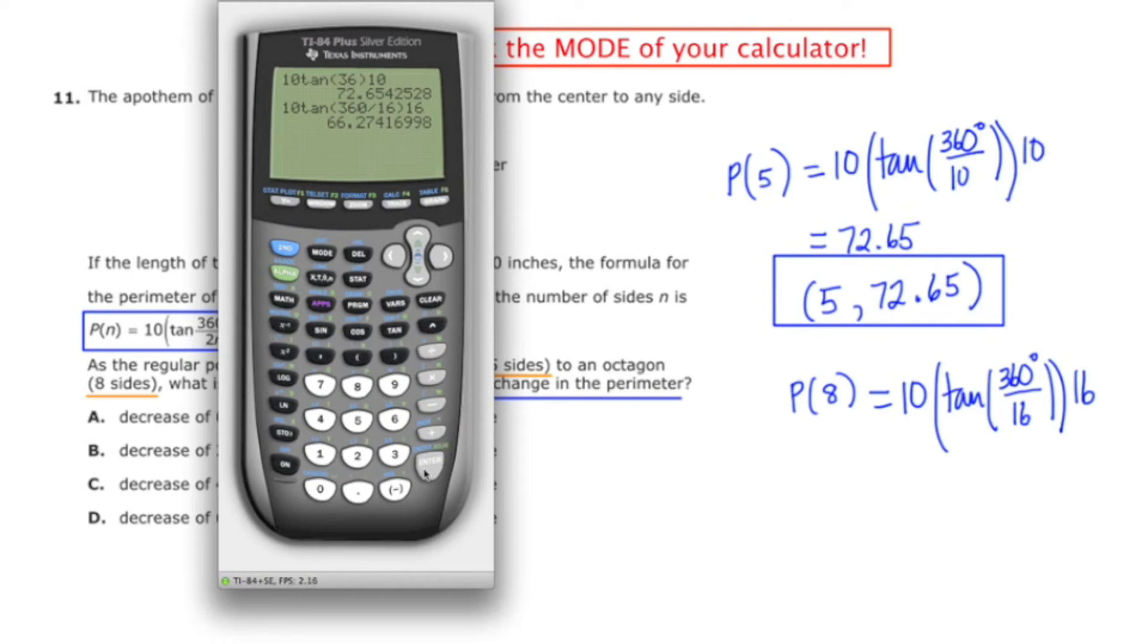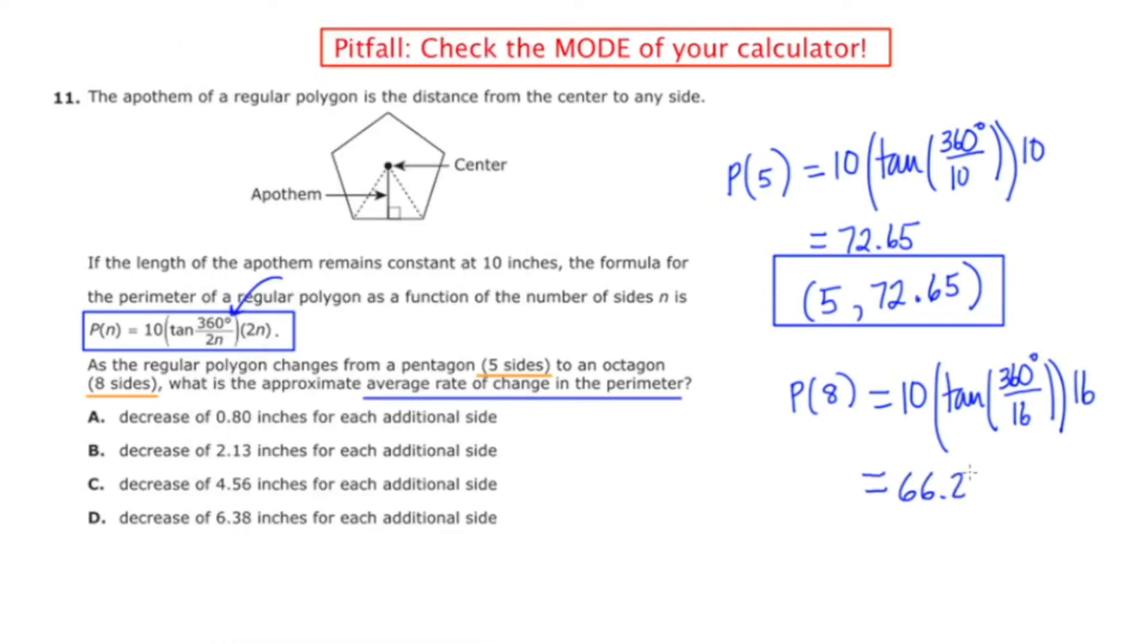And this is 66.27, and that suggests the ordered pair (8, 66.27).